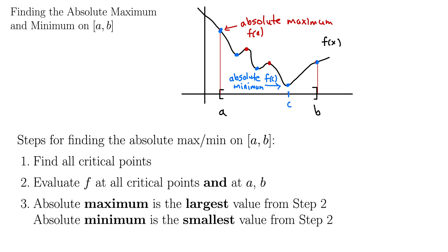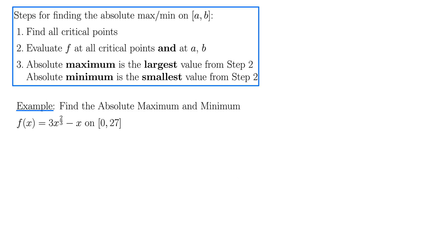So let's try this with an example. Here's an example. Find the absolute maximum and minimum for f(x) = 3x^(2/3) - x on the closed interval [0, 27]. Let's follow these steps here. We have step one, find all the critical points. And remember that's a two step method. We're looking for points where the derivative equals zero and where the derivative does not exist. So let's take the derivative and see what happens.